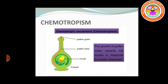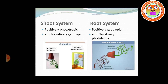Next is chemotropism. Chemotropism is the movement of a plant part in response to chemicals. Example: the growth of a pollen tube in response to sugar present on the stigma. The pollen grain germinates as a pollen tube and enters the ovule — that is movement of a plant part in response to chemicals. This chemotropic movement is the growth of the pollen tube towards the ovule because of the chemicals.